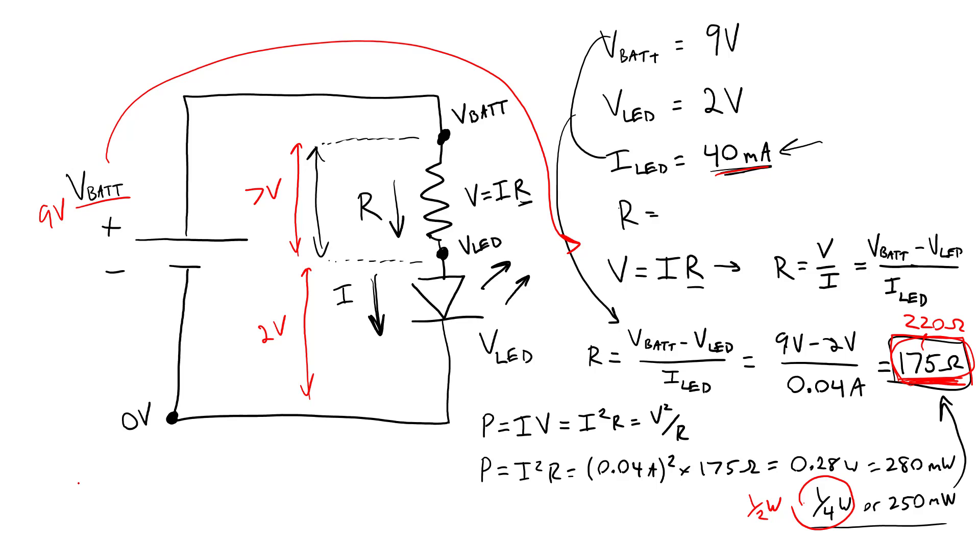And this is really a topic for a different video, but you can also combine multiple resistors to give you an equivalent resistor value. So you can combine two resistors in series to increase the resistance, or you can combine two resistors in parallel to give you a lower resistance, or you can make more complex networks of resistors in combinations of series and parallel to give you an overall equivalent resistance to get a more specific value.